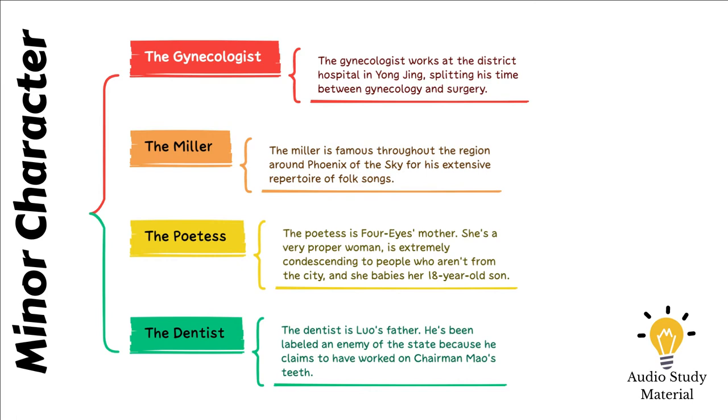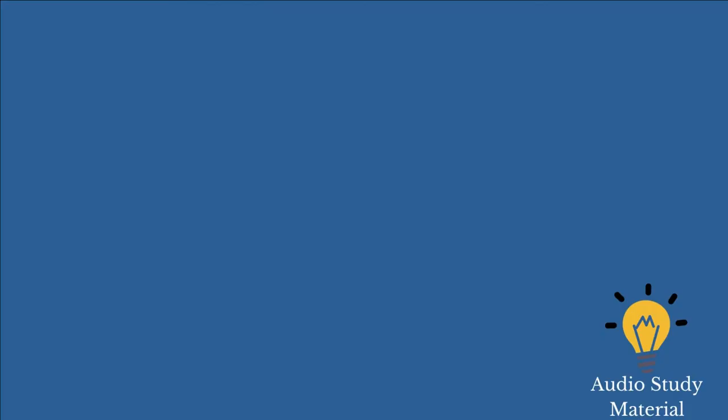The Little Seamstress is the mountain's princess. The tailor teases the narrator about his violin after the narrator and Luo encounter her father, the tailor, on a mountain trail.